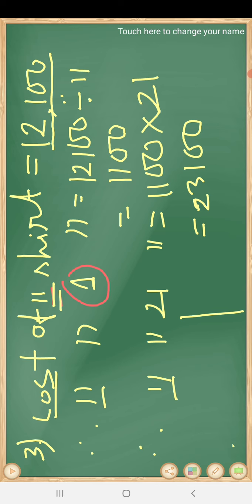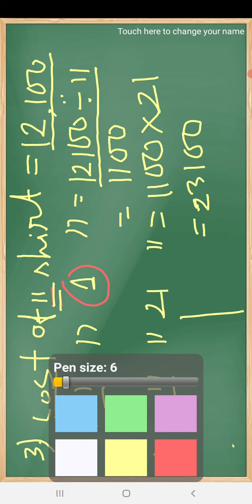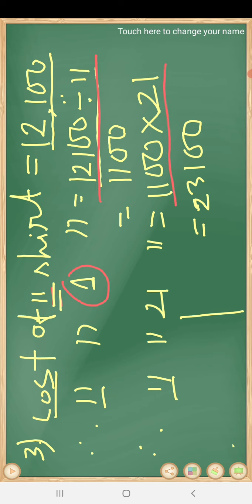So to summarize: in the unitary method, first we divide this value by this value, and then we multiply. The answer we get from dividing is then multiplied to find the final answer. This is called the unitary method because we always first convert to one. In question number one, we did not need to multiply because we only needed the cost of one banana, so the answer was finished after dividing.